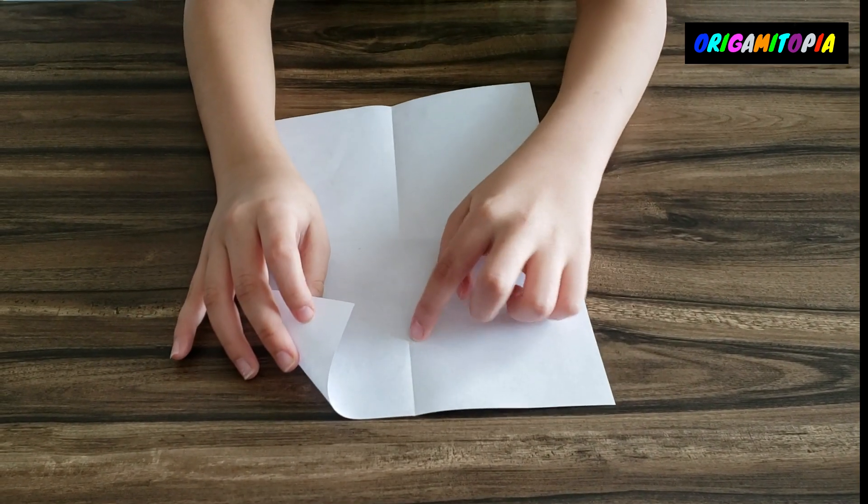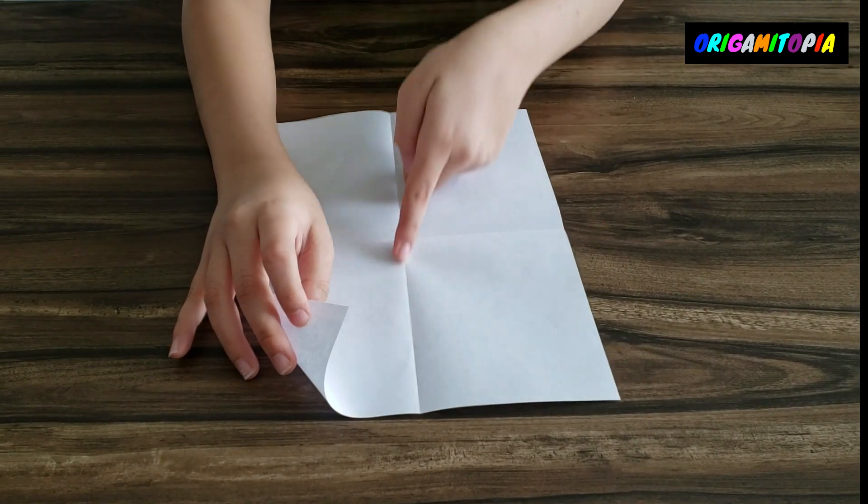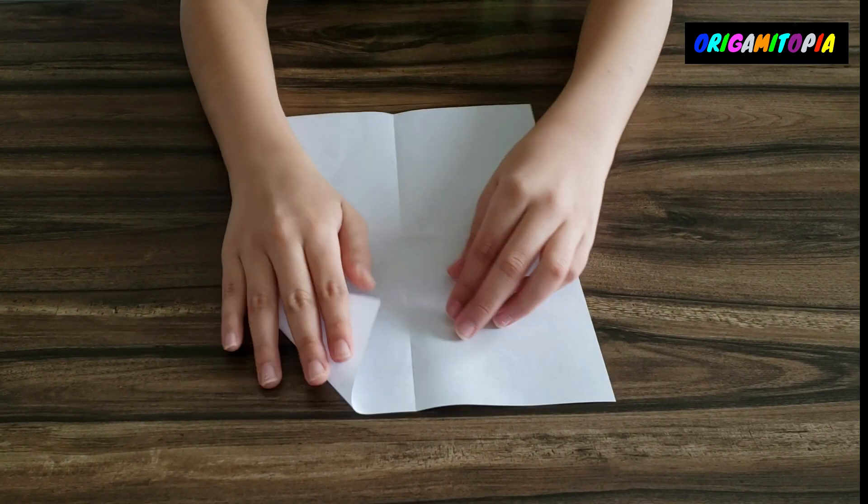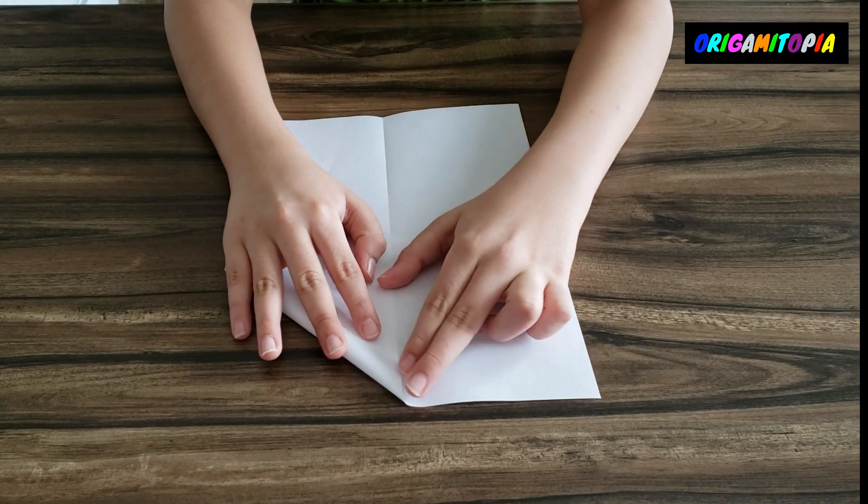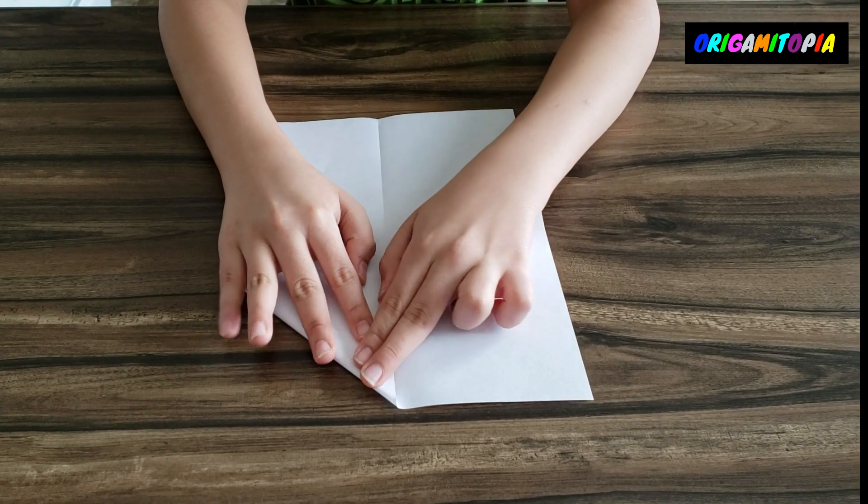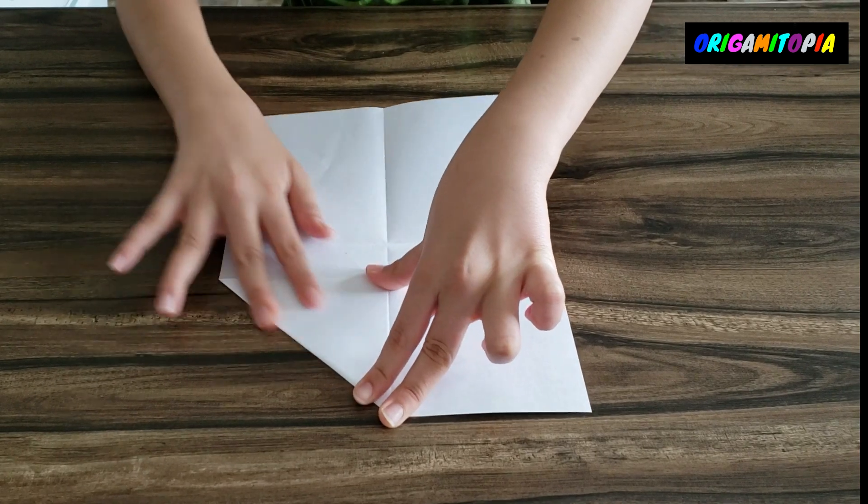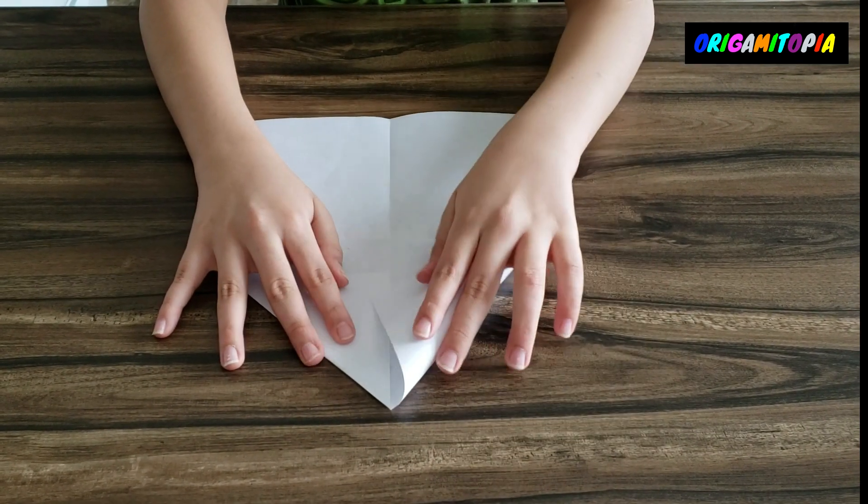And fold it right onto this vertical crease right here. So you're going to take the first one, fold it right there right on the crease, and then just do the same thing with this side.